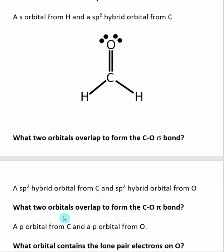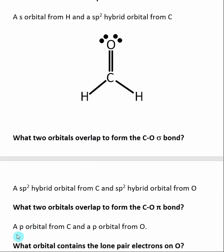Then we can ask, what two orbitals overlap to form the C-O pi bond? This one is fairly easy because pi bonds are always made by the overlap of p orbitals. It's a question of what two atoms are involved in the pi bond — in this case, a carbon and an oxygen. Each atom is putting a p orbital into the orbital overlap to form this covalent pi bond. So a p orbital from carbon and a p orbital from oxygen overlap to form the C-O pi bond.